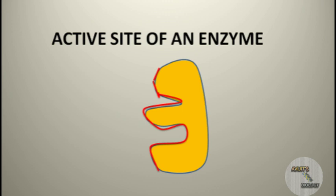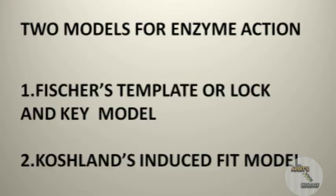The active site of enzyme consists of two sites. The first one is the substrate binding site where the substrate binds, and the second one is the catalytic site where the enzyme catalyzes the reaction. There are two different theories proposed for enzyme action.